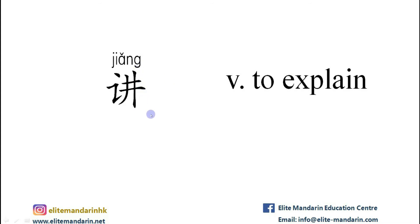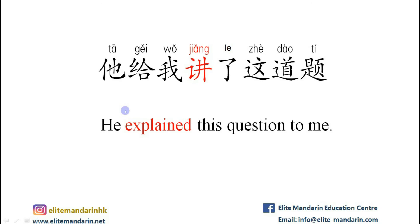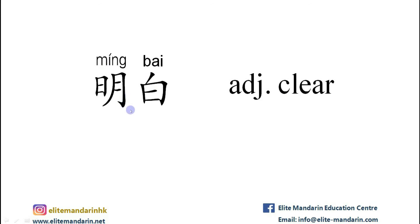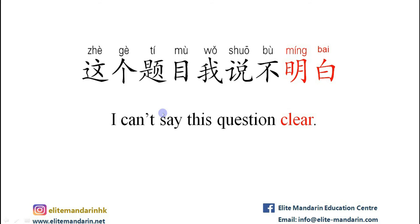讲 — it means to explain. The example: 他给我讲了这道题。 他 (he), 给 (to/for), 我 (me), 讲 (to explain), 这道题 (this question).